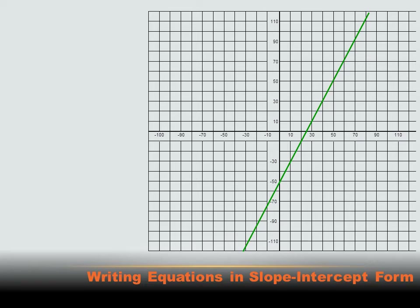That was pretty neat — we had an equation and we graphed it, creating a line. But could we go the other direction? If we had a line on a graph, could we create the equation it represents? If it's a straight line, meaning there's a constant rate of change, then yes — we can create an equation in the format y equals the slope times x plus the y-intercept. All we need to do is figure out the slope and the y-intercept.